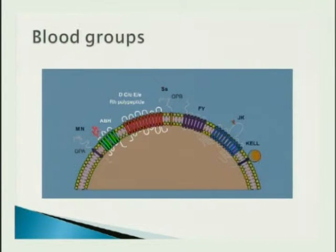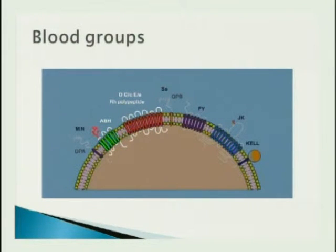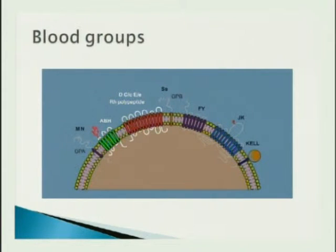So what are blood groups? This is a schematic of a red blood cell's surface. Blood groups are a very heterogeneous group of molecules. They range from the MNS blood system, which is carried on glycophorin A and B, to the ABH or ABO blood group system, which is actually carbohydrates put onto glycoproteins. The majority of the rest of the blood group systems are glycoproteins with multiple transmembrane domains, and we group them all together and call them blood groups because of their antigenicity in transfusion.